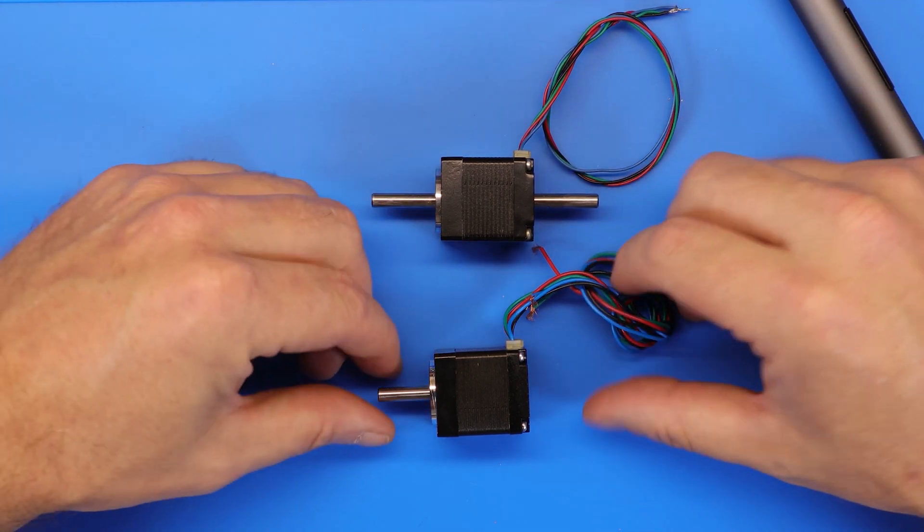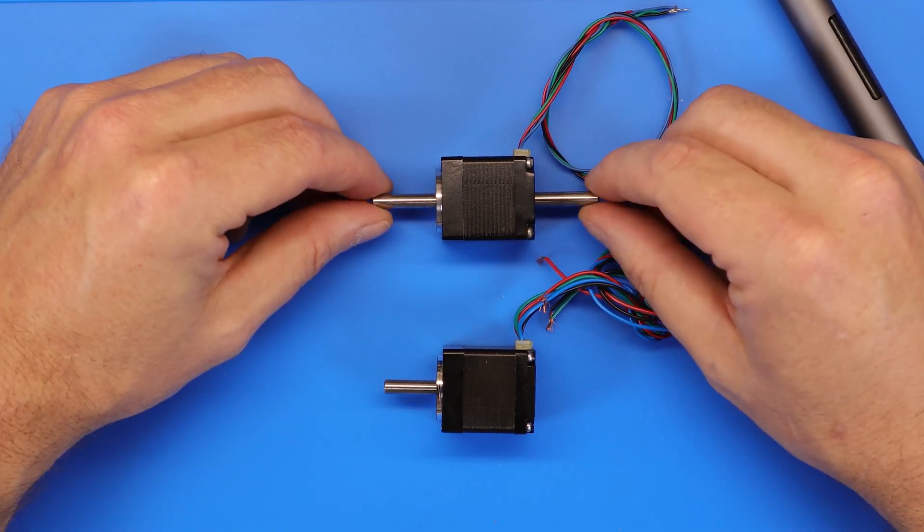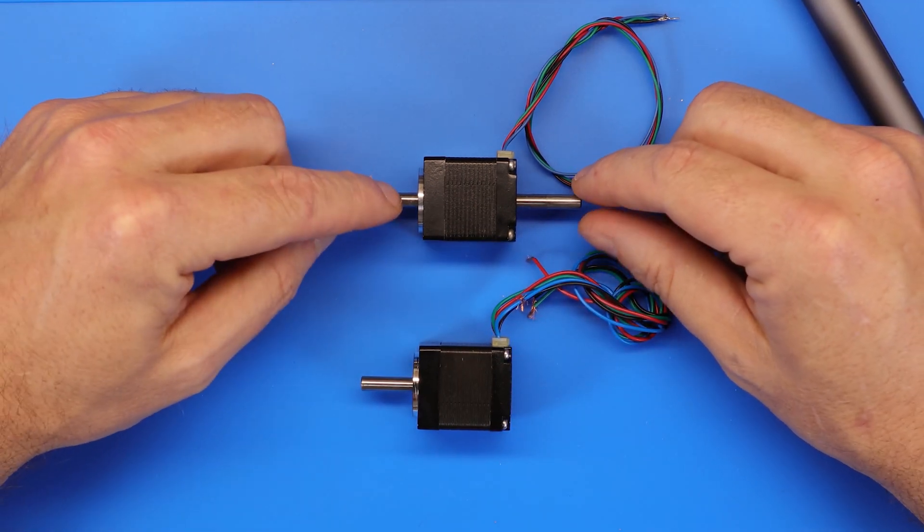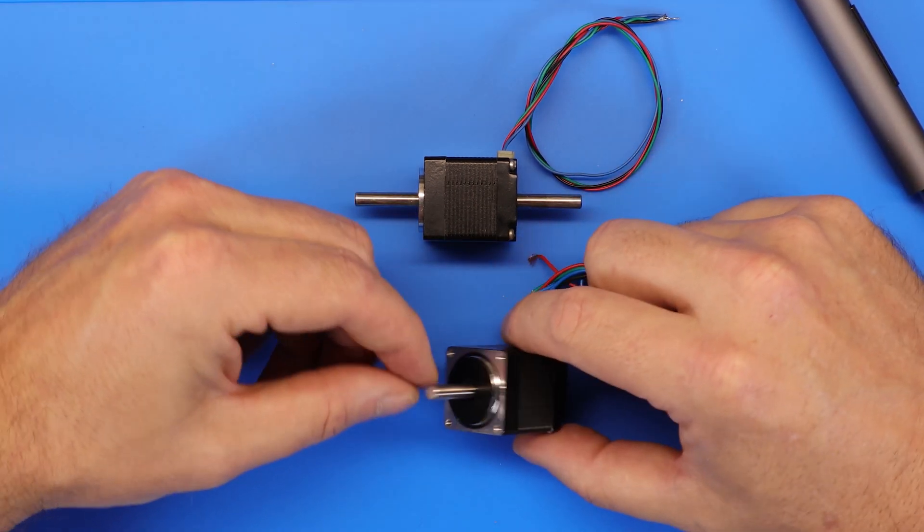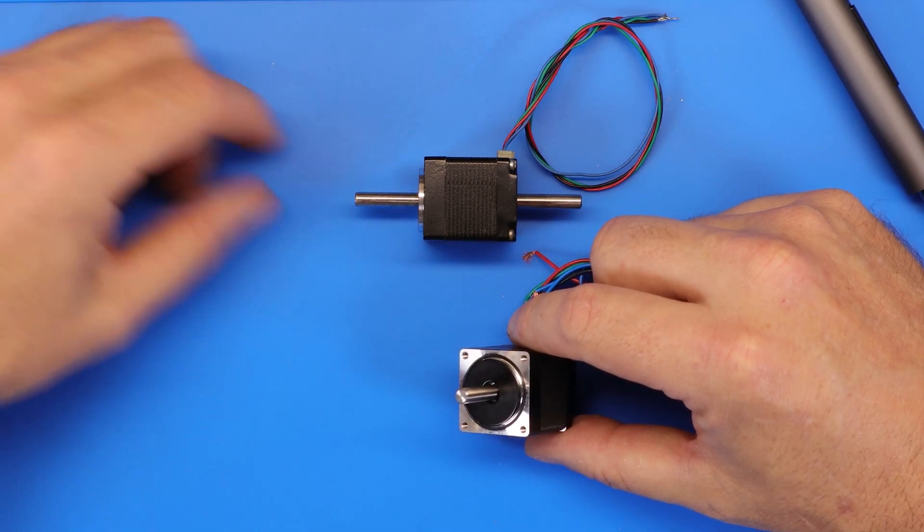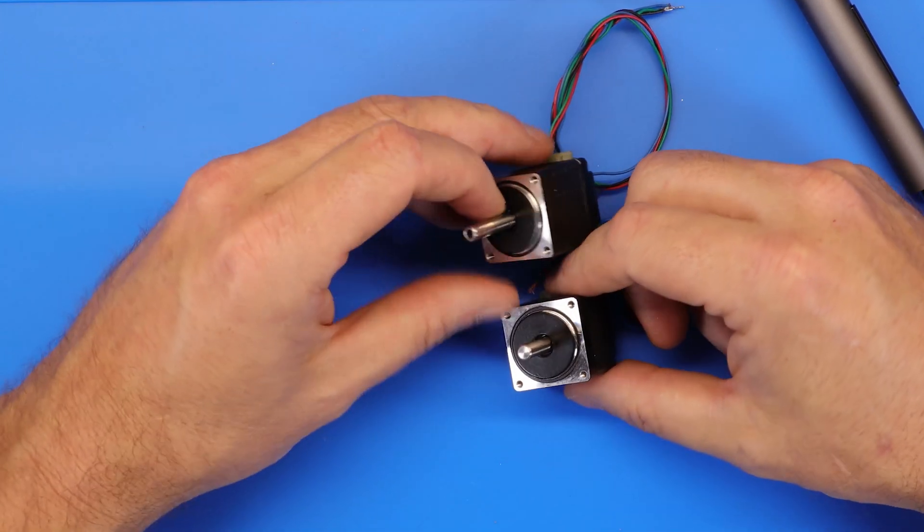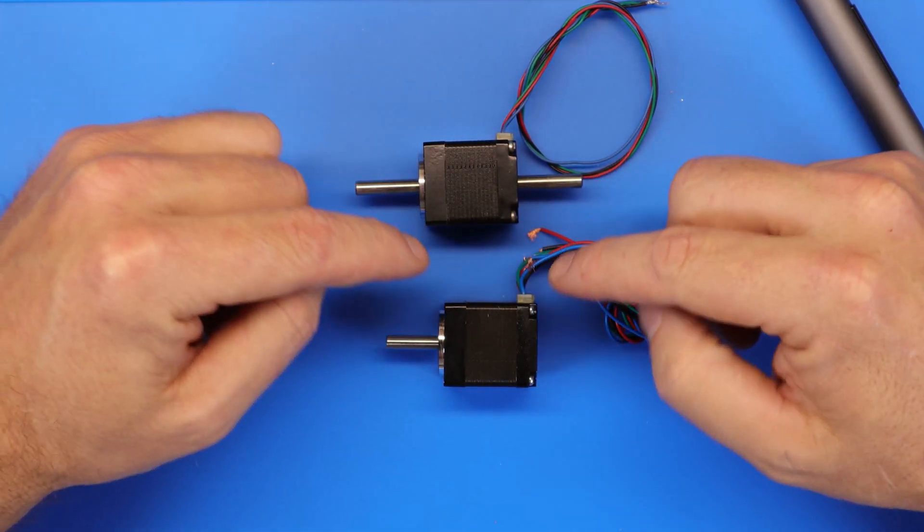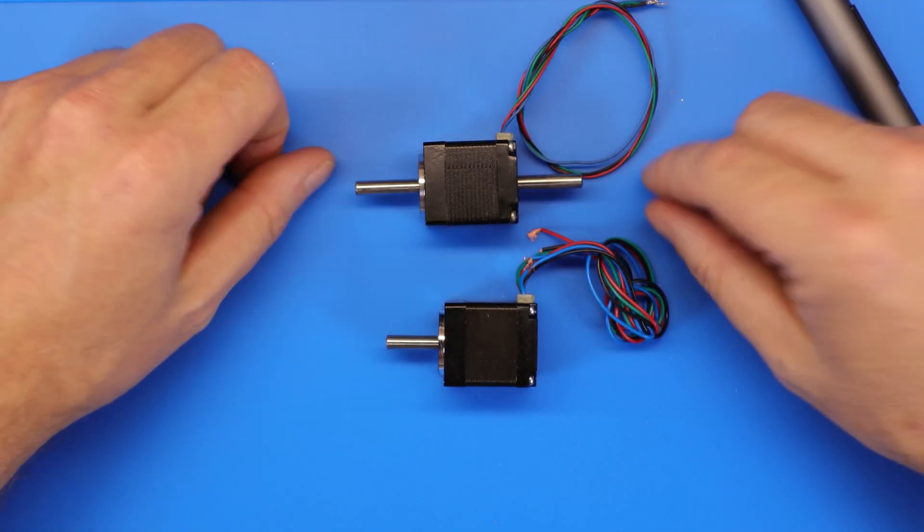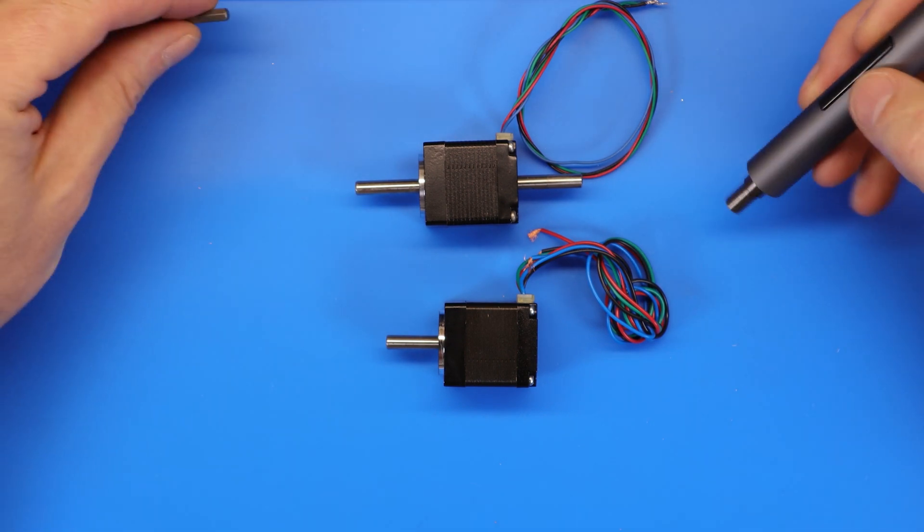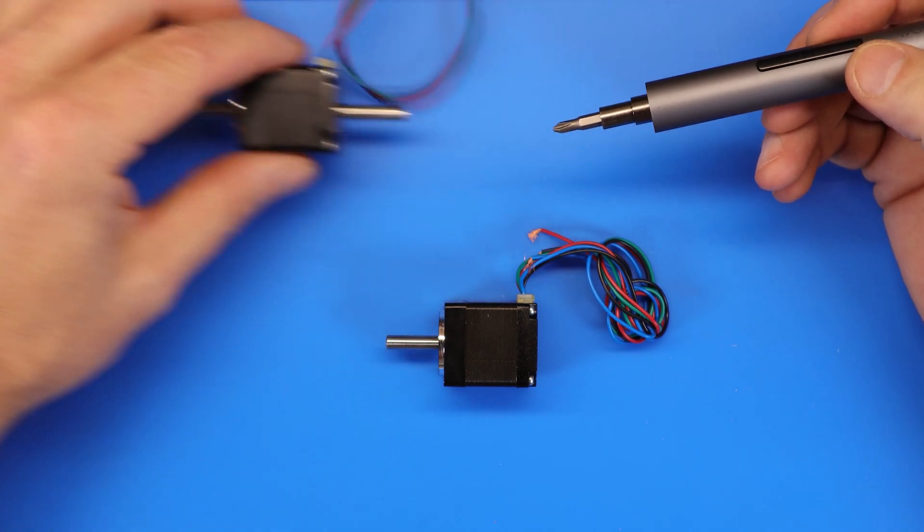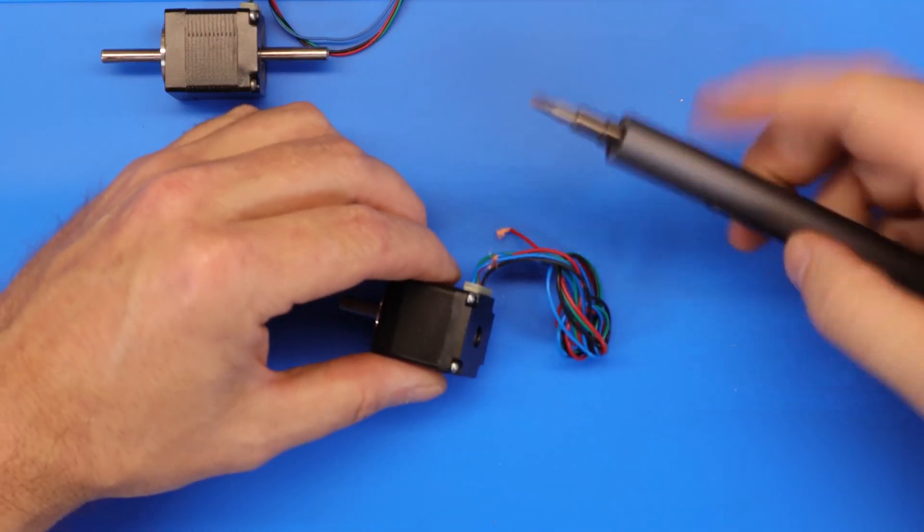So now, basically, we've got two identical motors, two steppers, except this one's got a hollow shaft. This one's got a slightly shorter solid shaft, but all the other specs match. So the idea is, let's take this apart, get the guts out of it, and get the parts we need. So first thing we're going to do, we're going to put the old one over here. I'm going to take this new one apart.